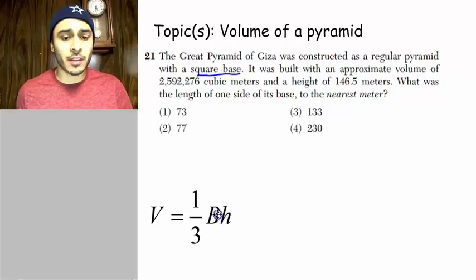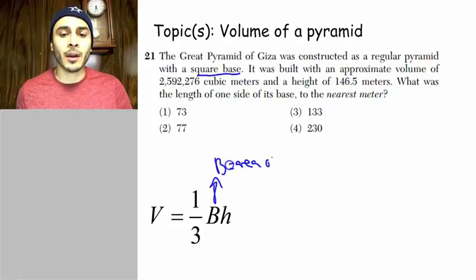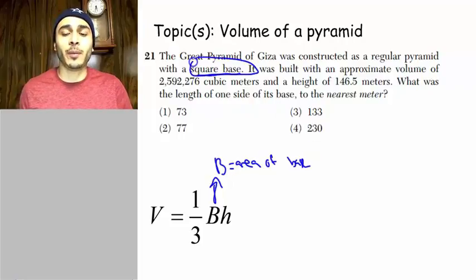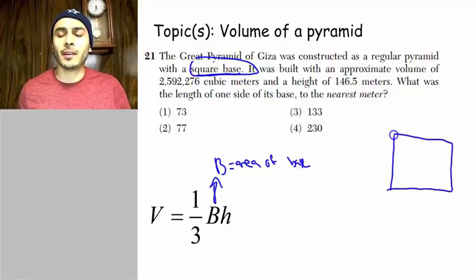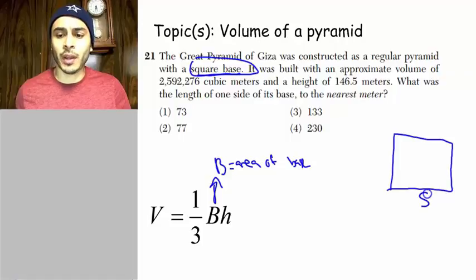And this B is important because it stands for something. B stands for the area of the base. And it says here we have a square base. So if we have a square base, how do you find the area of a square? Well, it's the side times the side or the side squared.